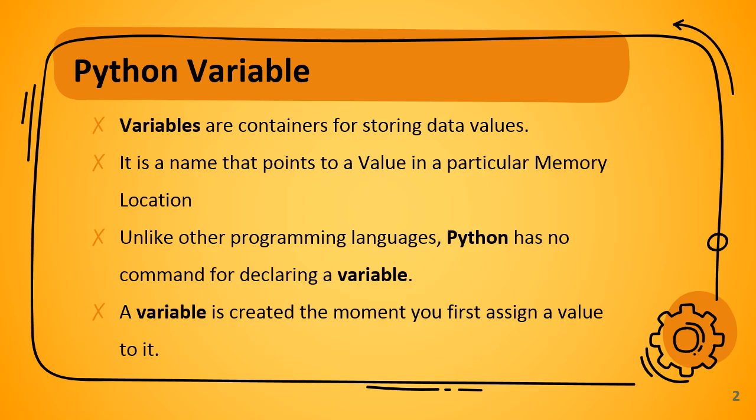Unlike other programming languages, Python has no command for declaring a variable. For example, in C++ you have to declare a variable along with its data type — for example, int a, where a is a variable with data type integer. Since there is no command for declaring a variable, Python explicitly types the variables.